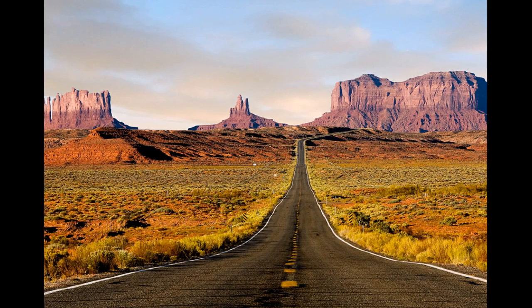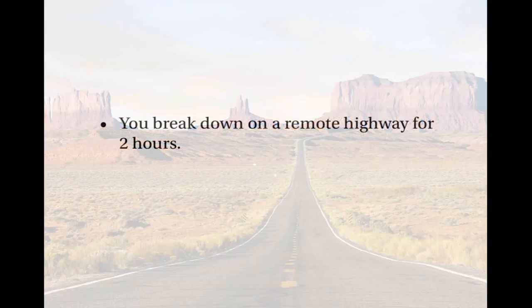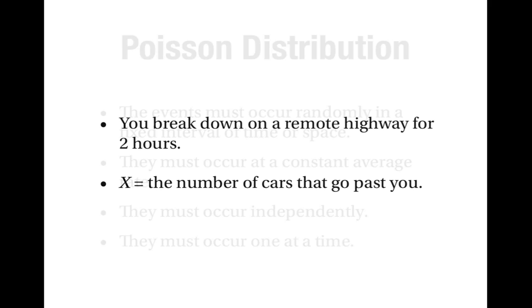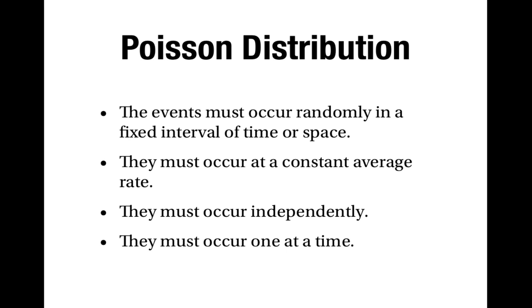Let's look at some examples to see how these criteria apply. First of all, imagine that you've broken down on a remote highway in a corner of America. Suppose that you've broken down for two hours and that the random variable x is the number of cars that go past you. It's reasonable to think that cars will go past in a random way, and we do have a fixed interval of time — two hours. So we can tick the first criterion.